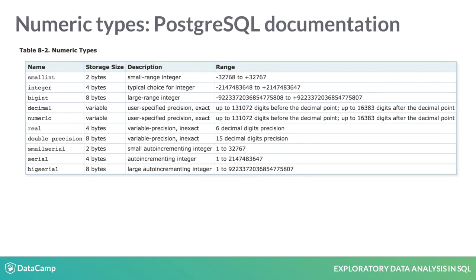Within the broad categories of numeric, character, or date time data, there are multiple column types with different details. For example, different numeric types require different amounts of memory per row and can store different ranges of values. In the upcoming chapters, we'll talk more about these specific types, so no need to worry about the details at this point.